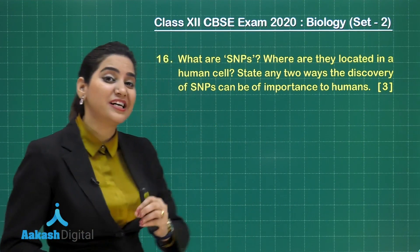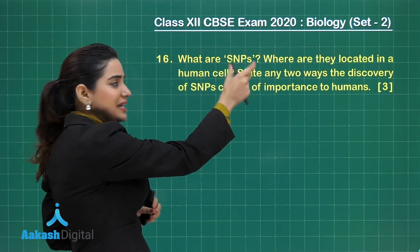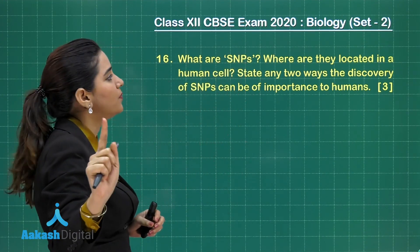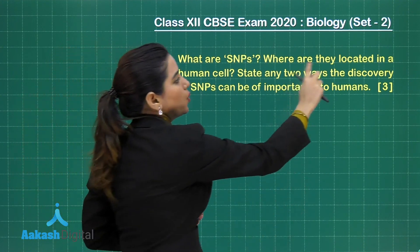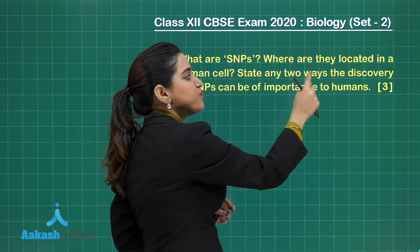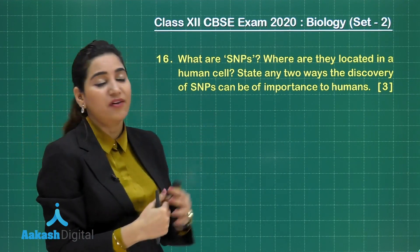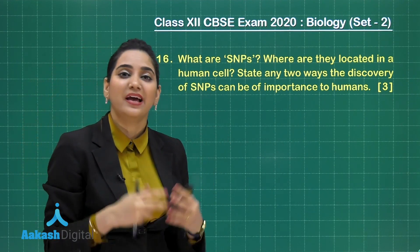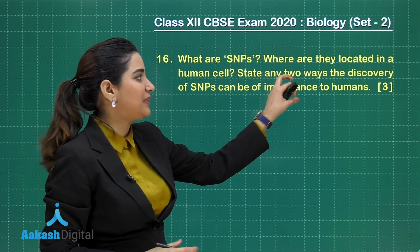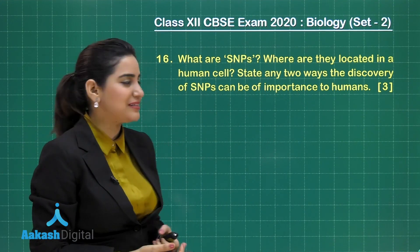The question is divided into three parts. If you write the definition properly and elaborate the term properly, you will get one good mark. Location gets one good mark, and 0.5 marks each for the two ways that the discovery of SNPs can be fruitful or important to humans. In total, you get three marks.